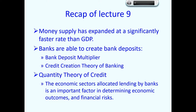I discussed the bank deposit multiplier and also the credit creation theory of banking. In the second part of lecture 9 I explained the quantity theory of credit and the insights it provides in relation to bank lending. I explained how the economic sectors that are allocated lending by banks are an important factor in determining the economic outcomes of bank lending and also the financial risks arising from bank lending.